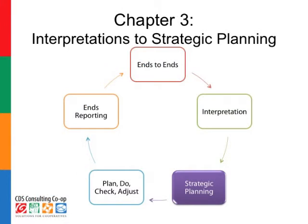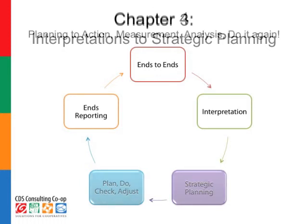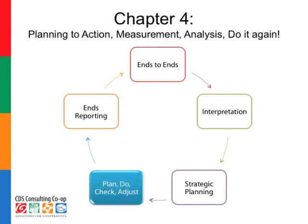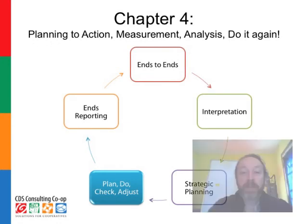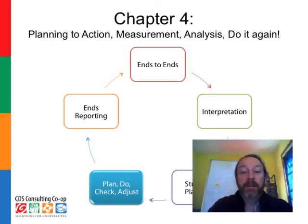So what we've done here in Chapter 3 is talked about how interpretation leads to strategic planning. The next chapter will talk about how strategic planning then connects to planning at the operational level — making things happen, checking to see how you're doing, and finally adjusting as needed.